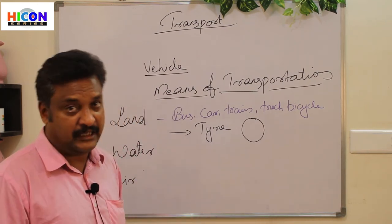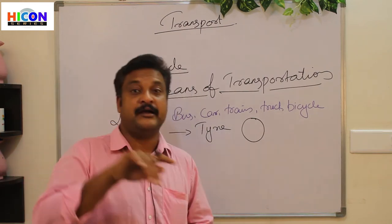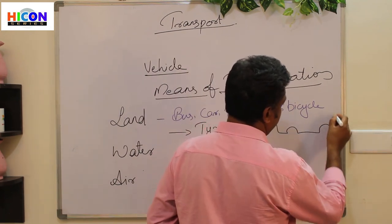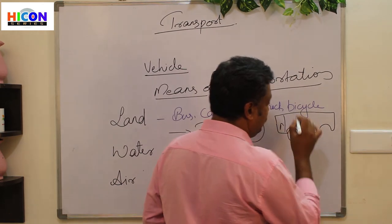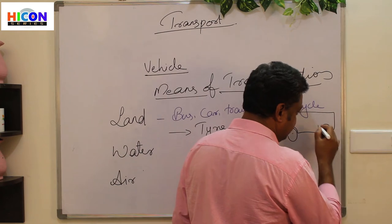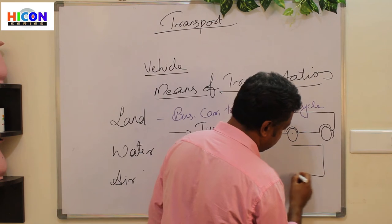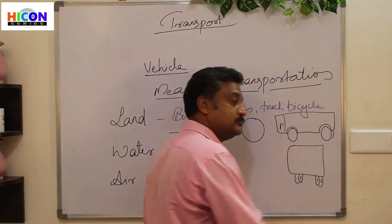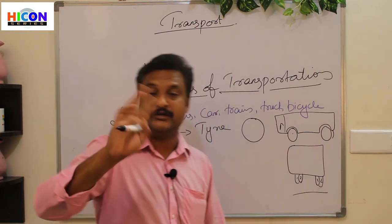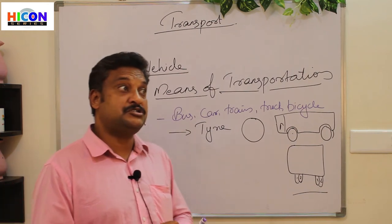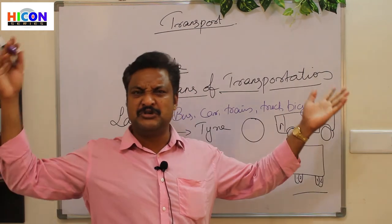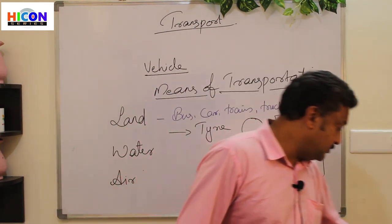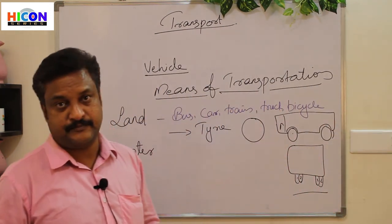Bicycles have two tires, auto-rickshaws have three tires, and cars have four tires. Buses have six tires — the back wheels have two tires on each side, so that's four at the rear and two in the front, making six total. Huge trucks that carry very large loads will have even more tires. So the size of the tire also differs based on the type and size of the vehicle — a bicycle tire is small while a tractor tire is very big.